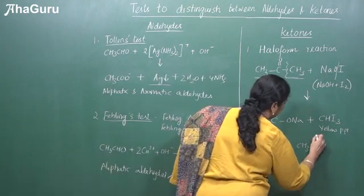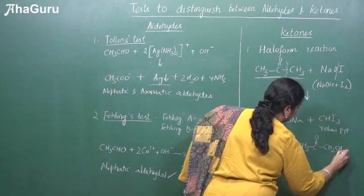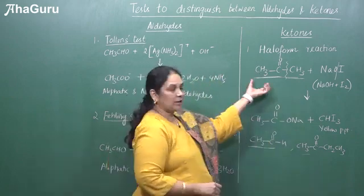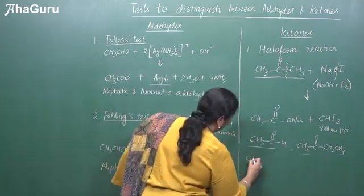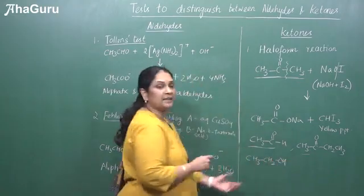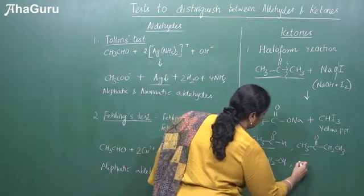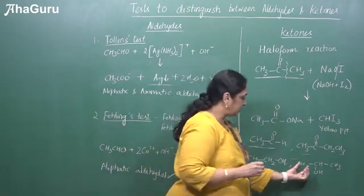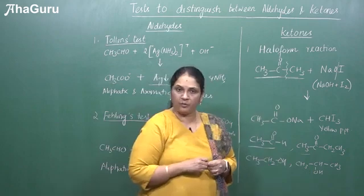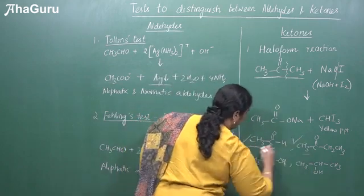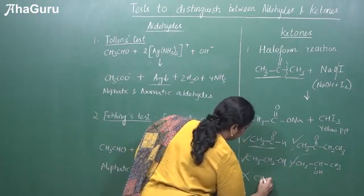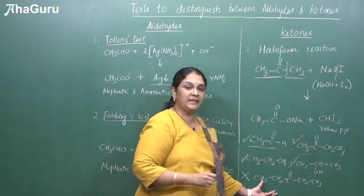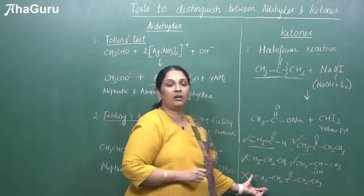The haloform test will be answered by any methyl ketones — for example, a ketone with CH₃ on one side and an ethyl group on the other, because there is a COCH₃ group. Acetone will also answer this test. You can also take an alcohol like CH₃CH₂OH, because it can be oxidized to the corresponding aldehyde, or CH₃CHOH with any alkyl group. All compounds with a CH₃CHOH group will give a positive haloform test. Compounds like diethyl ketone will not give the haloform test because there is no CH₃ group attached to the CO group — both sides are ethyl.